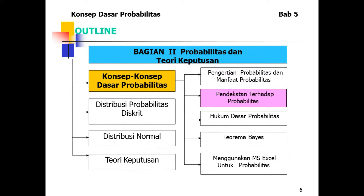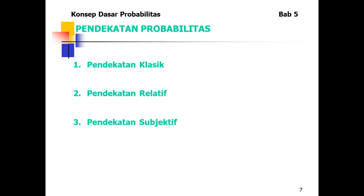Setelah membahas pengertian dan manfaat probabilitas, kita membahas pendekatan terhadap probabilitas. Pendekatan probabilitas mempunyai tiga macam: pertama, pendekatan klasik; kedua, pendekatan relatif; ketiga, pendekatan subjektif.